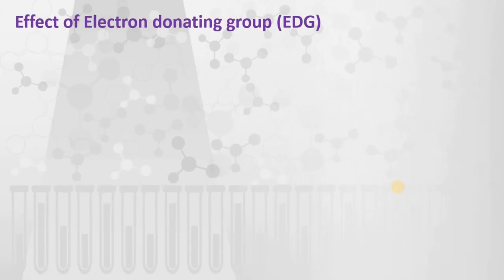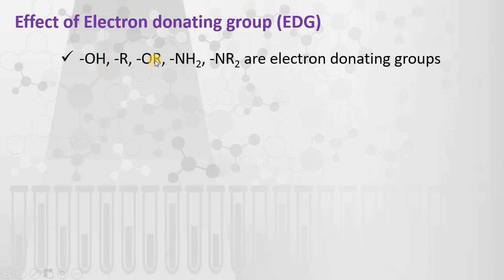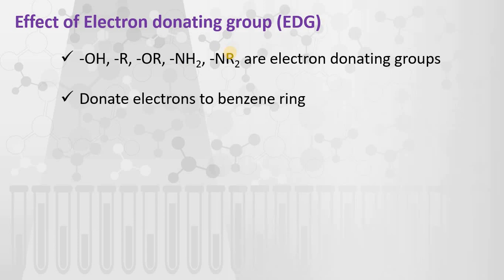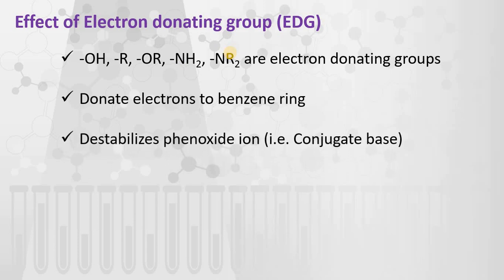The electron donating groups (EDG) include OH, R, OR, NH2, and NR2. These groups donate electrons to the benzene ring and destabilize the phenoxide ion. Both the electron donation from these groups and the negative charge formed on the oxygen feed electrons into the benzene ring, so the negative charge on the oxygen cannot be stabilized.